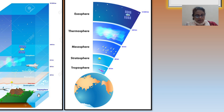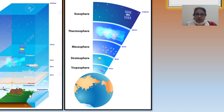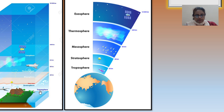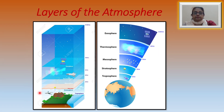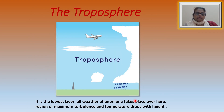The term troposphere has been derived from a Greek word — 'tropo' means mixing or turbulence. All kinds of weather phenomena like lightning, rainfall, snowfall, etc. occur in the troposphere. This layer contains all the water vapour and most of the dust particles. Water vapour condenses into clouds and fog, and the temperature drops as one goes higher up.